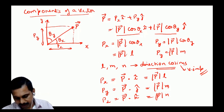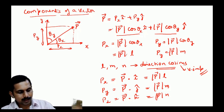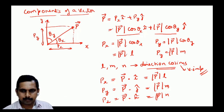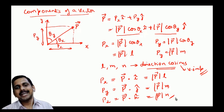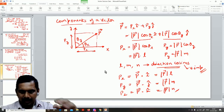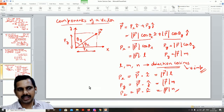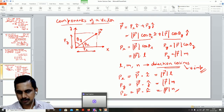Direction cosines l, m, n are very important — they appear in vector calculus as well. We will stop here for today. Tomorrow we will see more algebra involving direction cosines, work through gate problems, and build a deeper understanding of the basics.